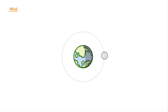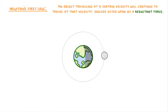We know from Newton's first law that an object travelling at a certain velocity will continue to travel at that velocity unless it's acted upon by a resultant force. So if the Moon is travelling in this direction at 1023 metres per second, which we call its instantaneous velocity, then it should continue to travel in this direction and at this speed forever.